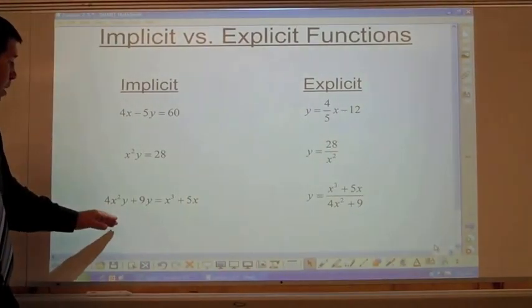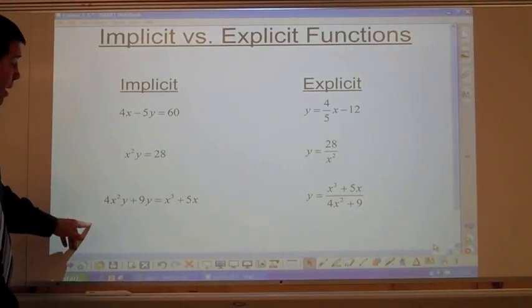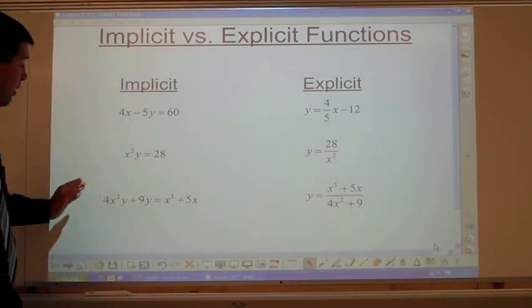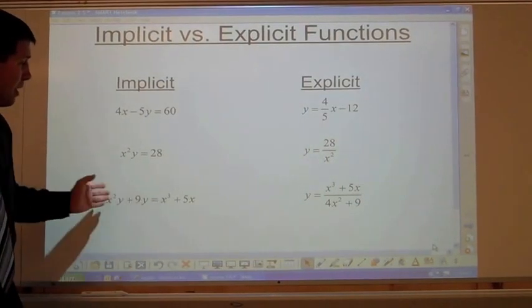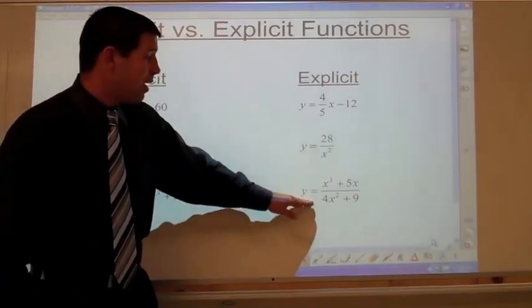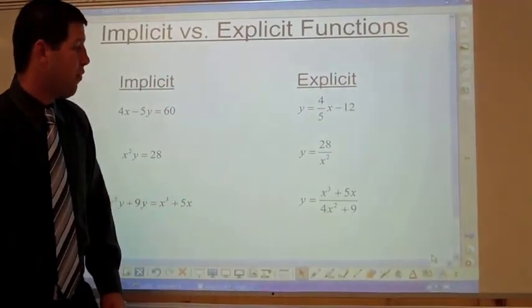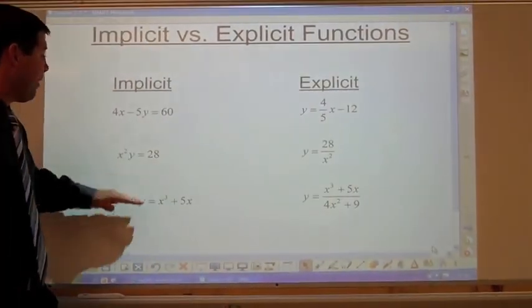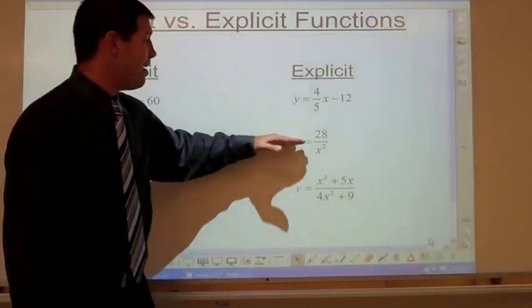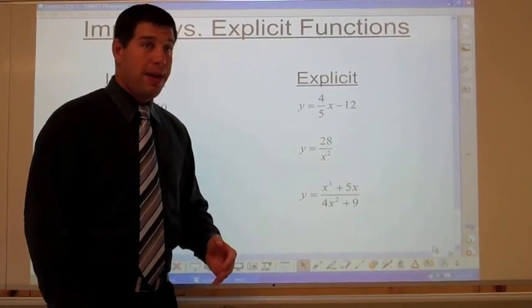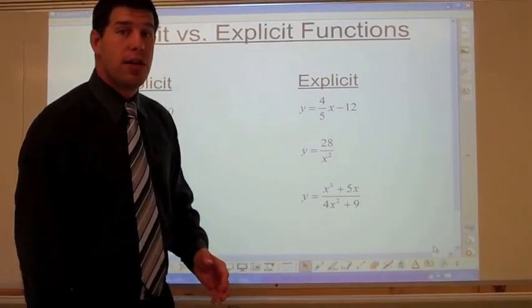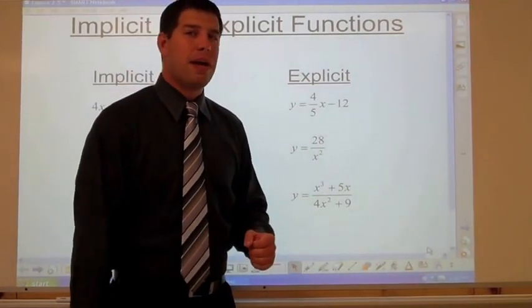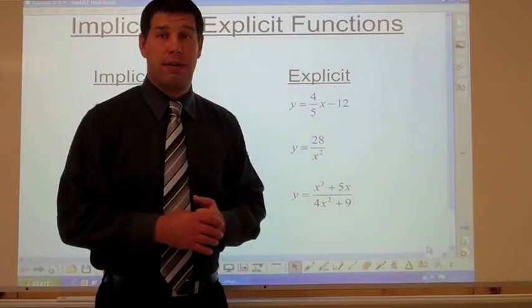For the third equation, factor out a y from each side: you get (4x squared plus 9) times y equals x cubed plus 5x. Divide both sides, so y equals (x cubed plus 5x) all over (4x squared plus 9). So you can take each of these implicit equations and turn them into an explicit equation.